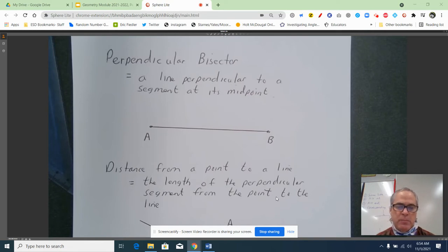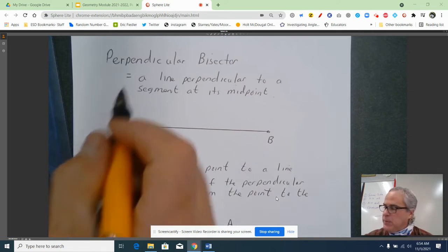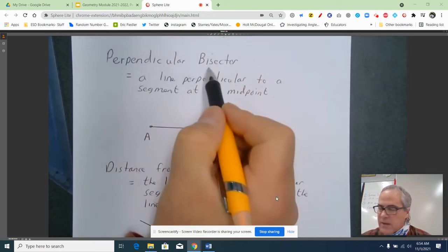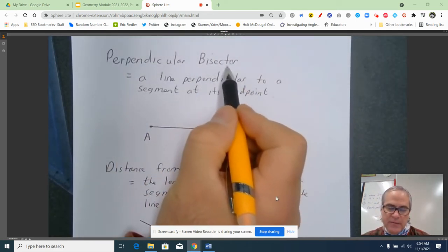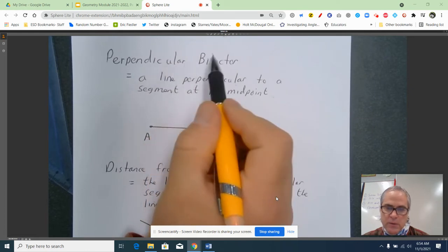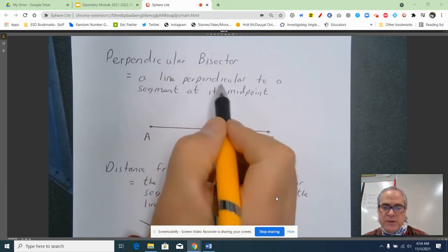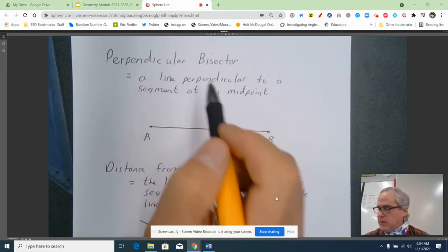First one is perpendicular bisector. Think about what perpendicular means - it means that it forms right angles. Bisector means that it cuts in half. Forms right angle, cuts in half. Here's the book definition: a line perpendicular to a segment at its midpoint. Now there's a couple things going on there.